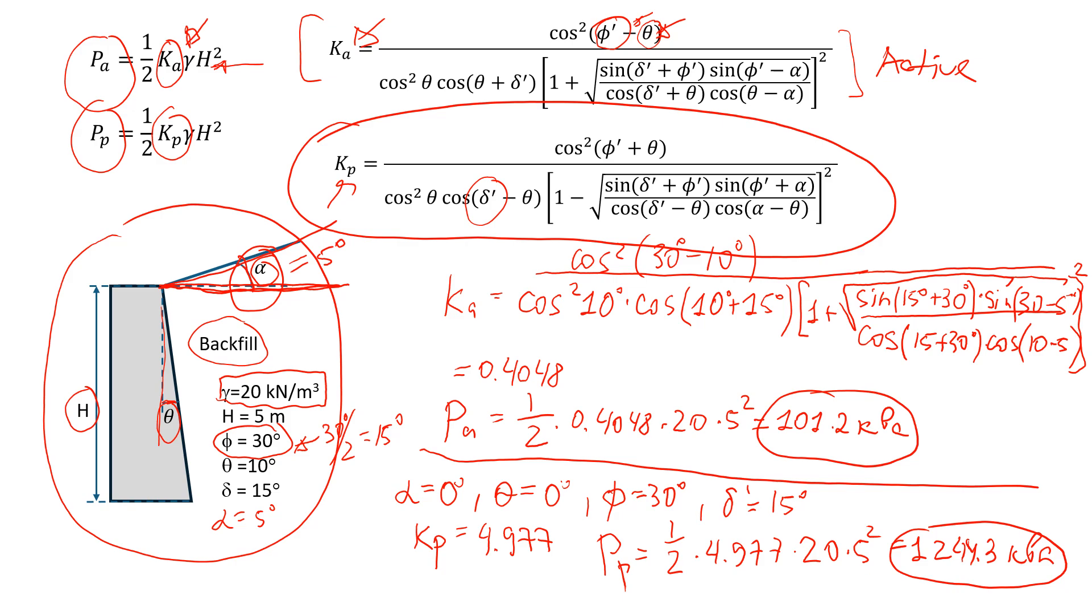So that will be the answer for the passive pressure. You see here, for the passive pressure, we changed alpha and we also changed theta, so that we can look at different numbers, different examples. So that's how we do it.